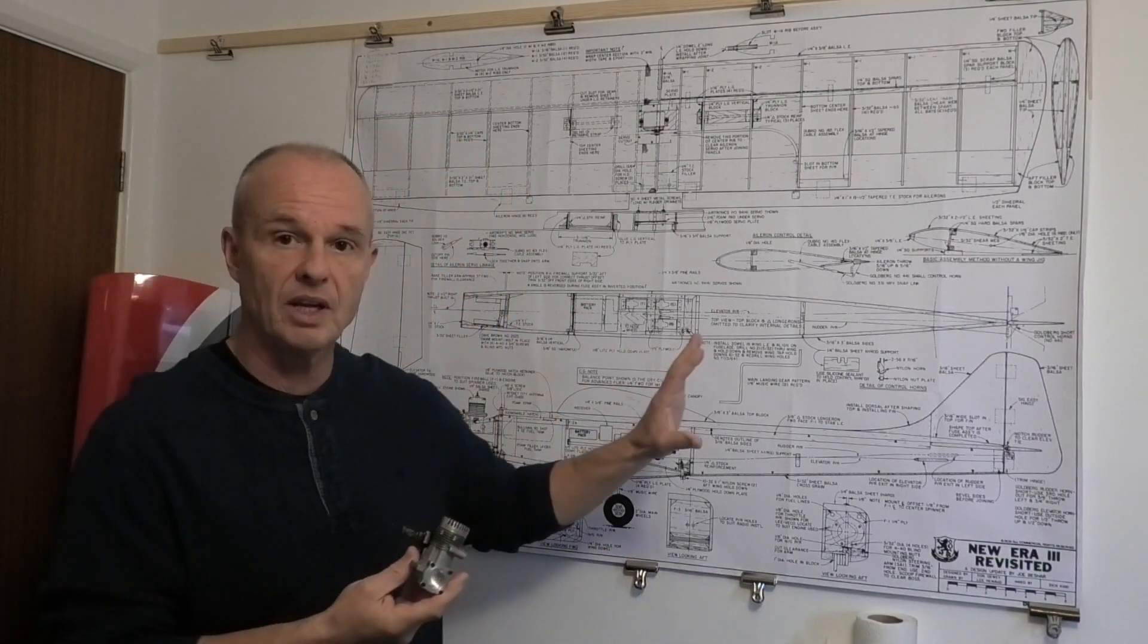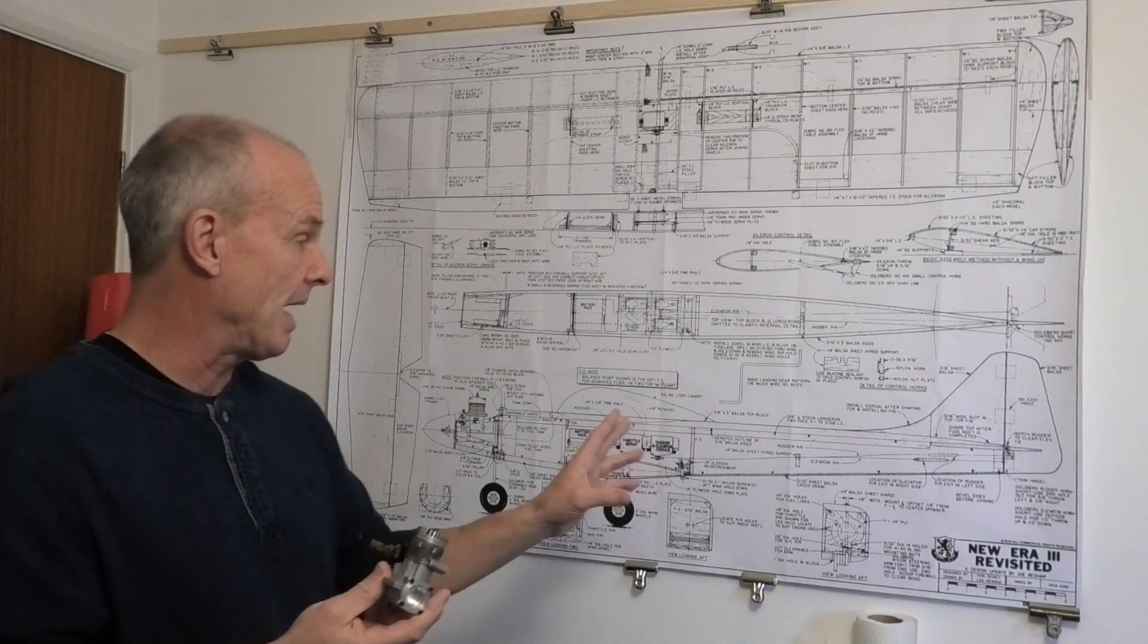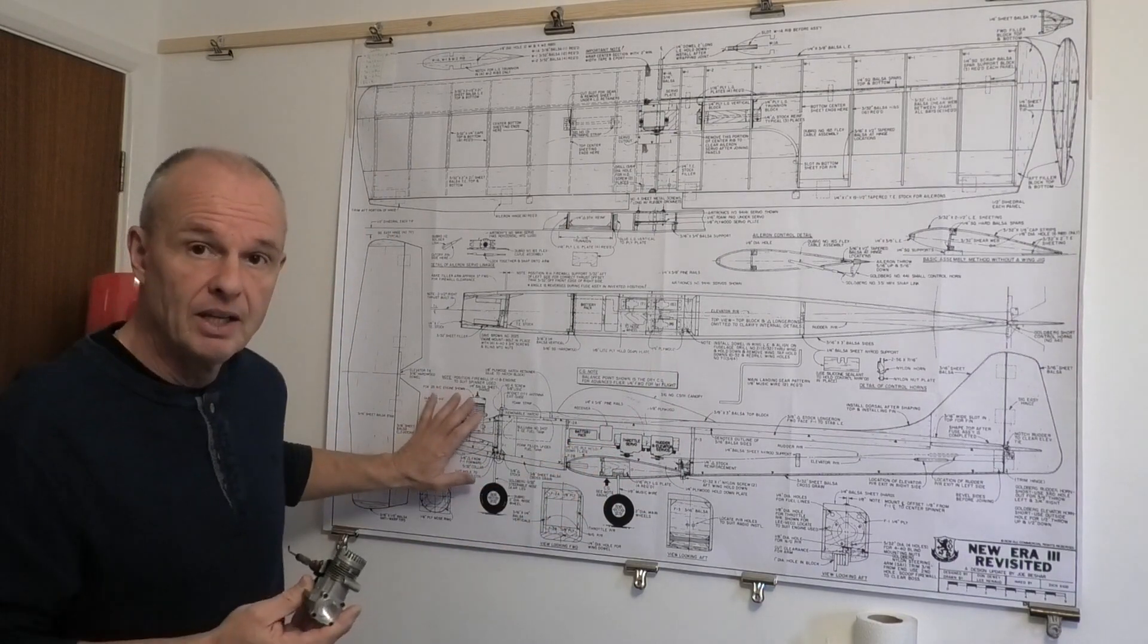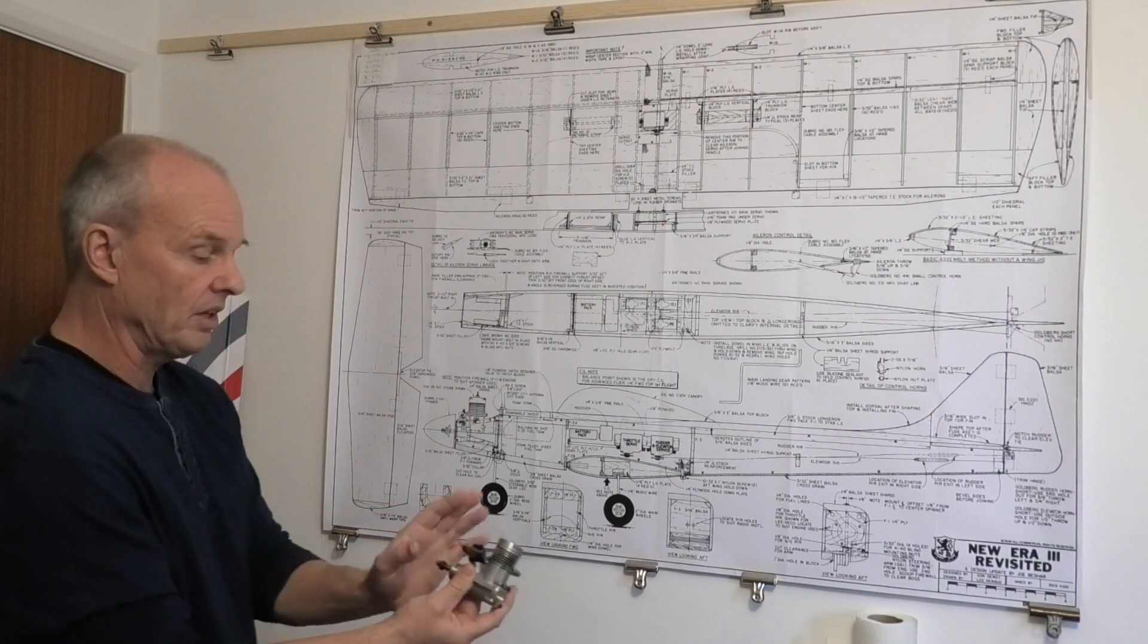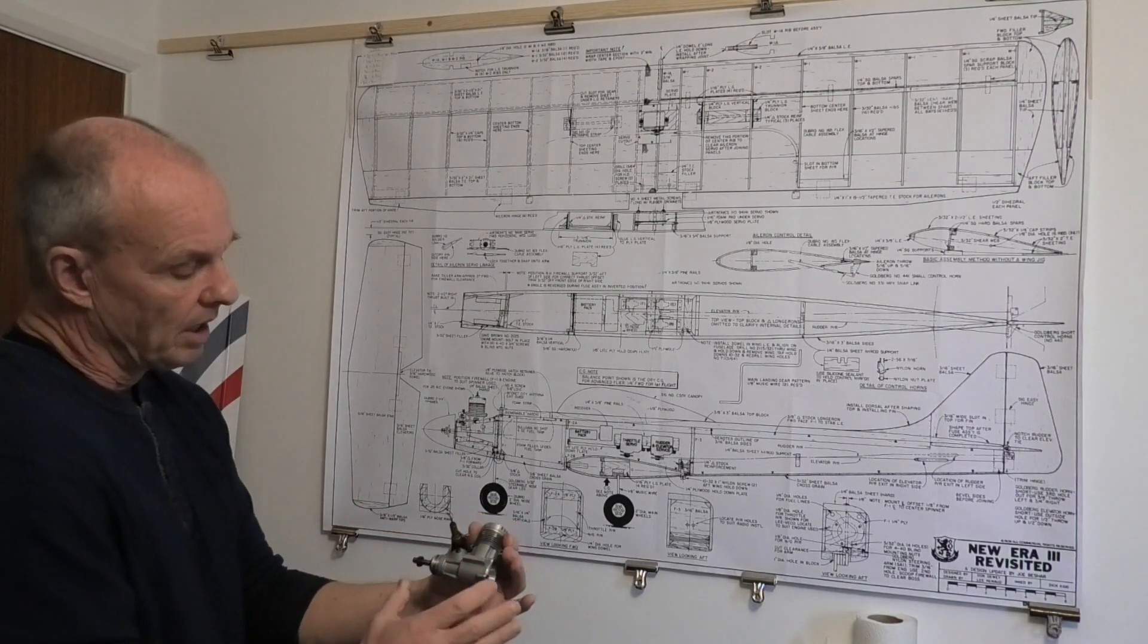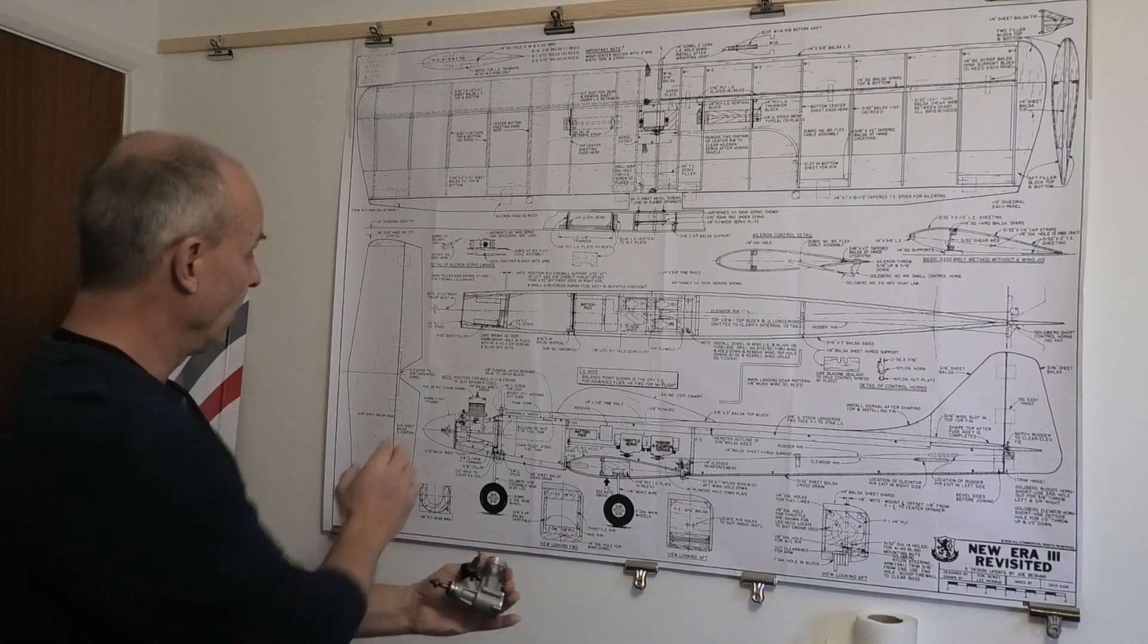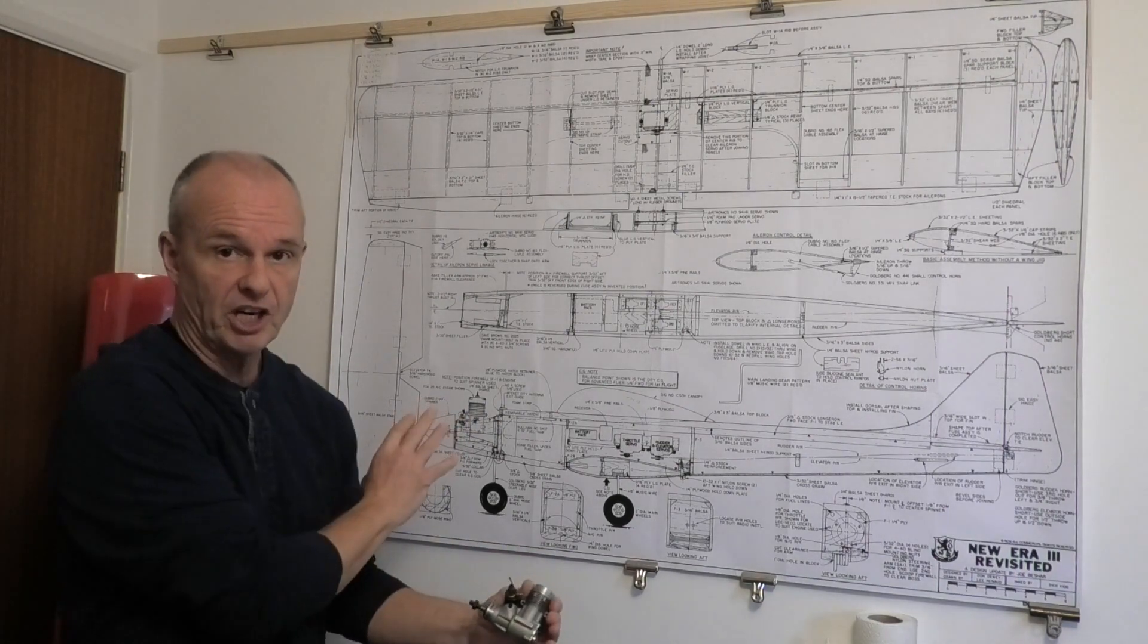One of the things with the plan that I need to think about is the siting of the engine or the fitting of the engine, because the Irvine is slightly longer front to back than the Fox 25 that's shown on here.